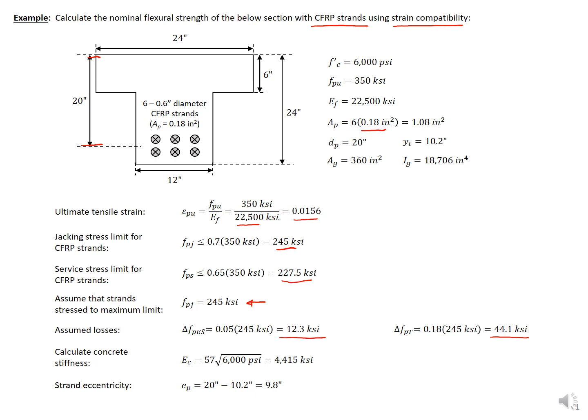Finally, we need to find our concrete stiffness, which is 4,415 ksi, and our strand eccentricity, which is the distance between the centroid of our section — 10.2 inches — and the centroid of our strands — 20 inches — giving us an eccentricity of 9.8 inches.